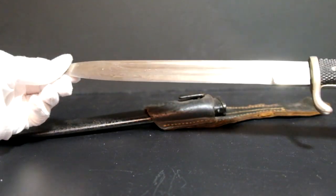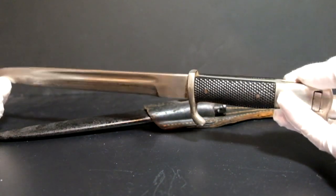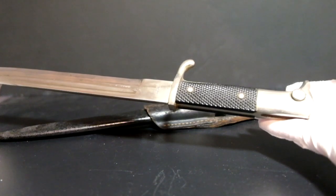Dress bayonets worn by the German armed forces will usually have a bayonet lug slot at the hilt, while police and firemen bayonets won't.